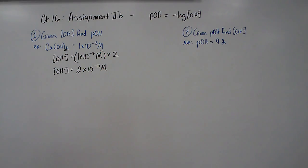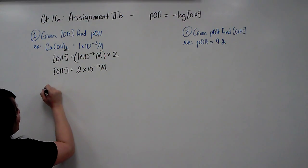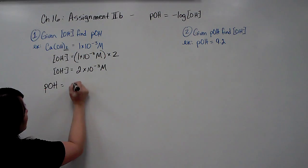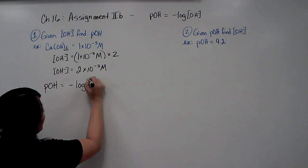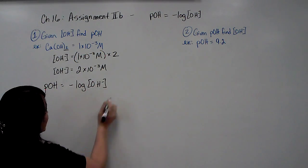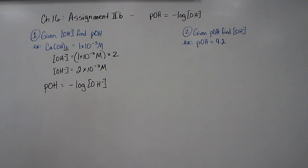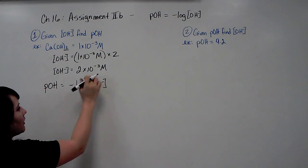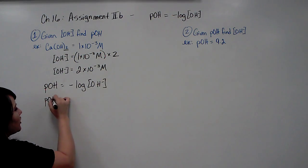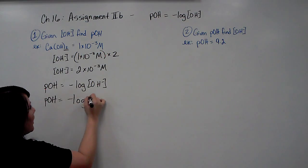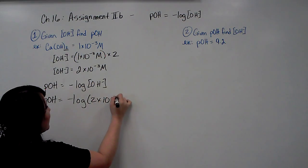Therefore, our actual hydroxide ion concentration is going to be 2 times 10 to the negative 3 molar. Okay, now that we've taken care of that blast from the past, we're going to use our equation, and it's going to be POH equals the negative log of the hydroxide ion concentration. And this one's pretty simple because all you have to do is plug in your hydroxide concentration, which is this one right here.